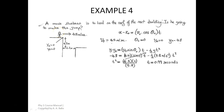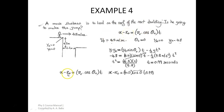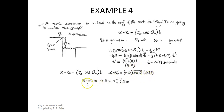So it will take the movie stuntman 0.99 seconds to jump from the top of the taller building to the top of the lower building. Now that we have t, we can find x minus x₀: x minus x₀ equals v₀ cos(θ₀) multiplied by t, which gives 4.5 × cos(0) × 0.99. Since cos(0) is 1, we get x minus x₀ equal to 4.5 meters.